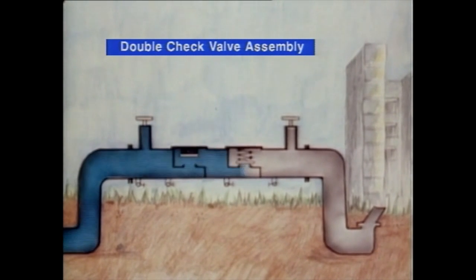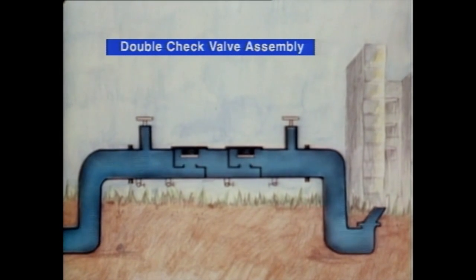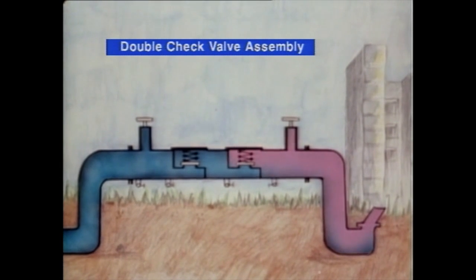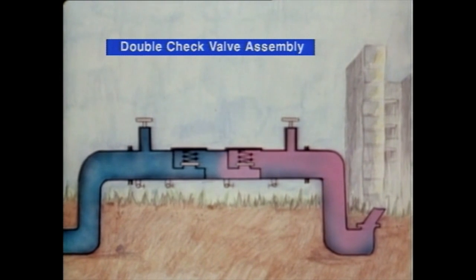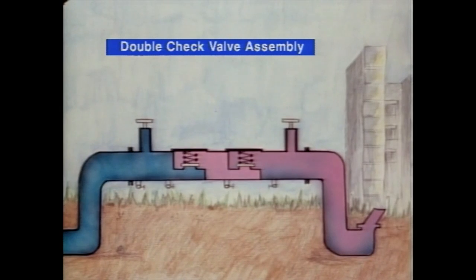But if the water became polluted in the building and the pressure from the booster pumps ever created the potential for backflow, the one-way check valves would be forced closed. Even in situations where one of the check valves was held open by sediment or rust particles caught on the valve seat, only a small amount of backflow could ever get through. A double-check valve assembly can only be used to protect against aesthetically objectionable materials — that is, not dangerous to our health.